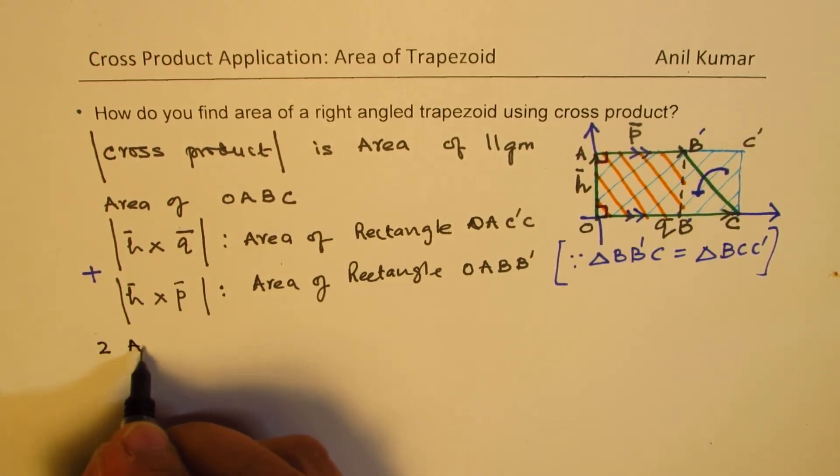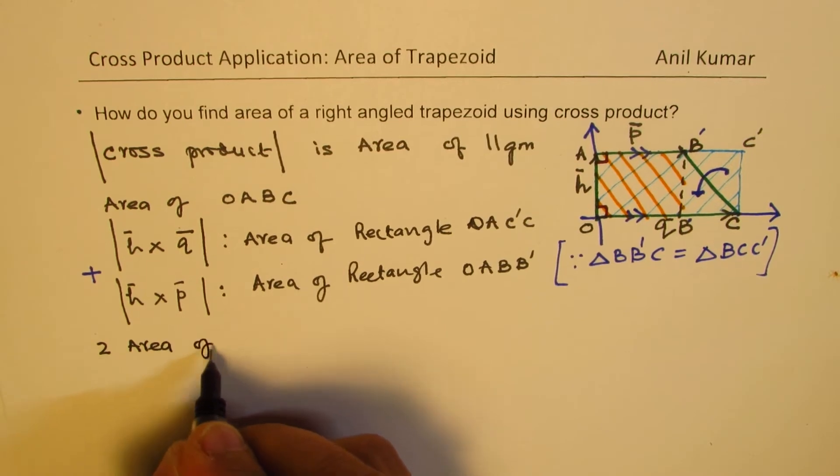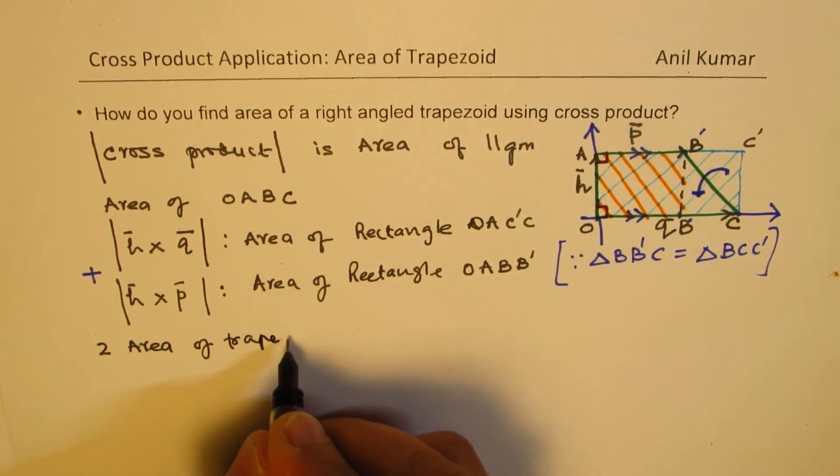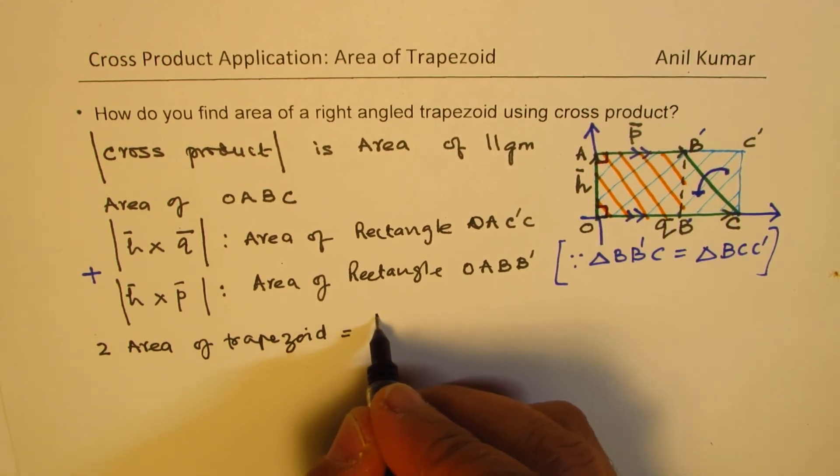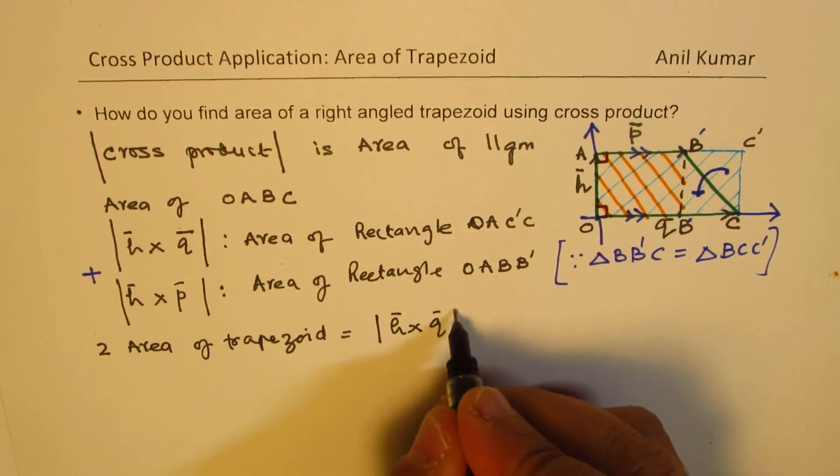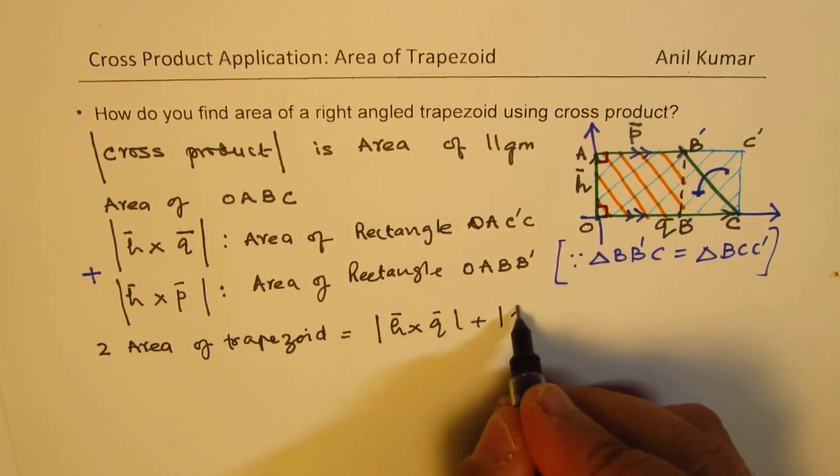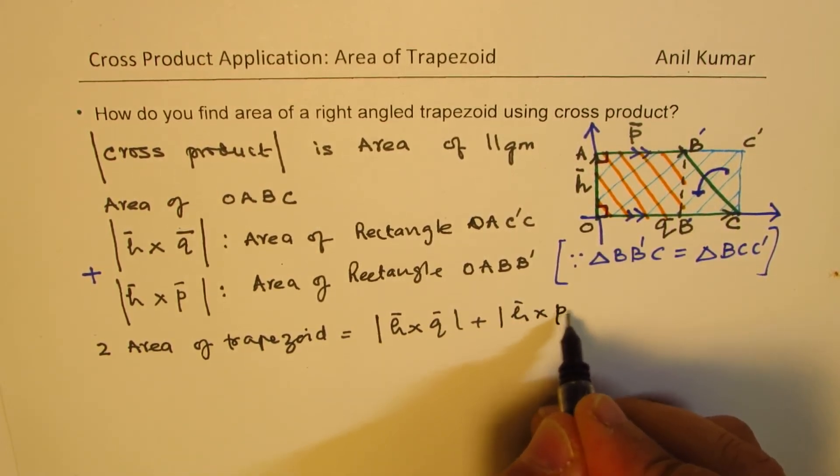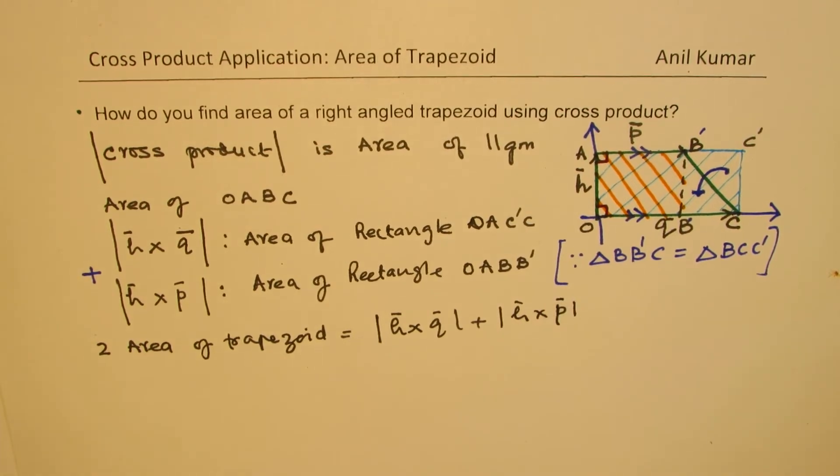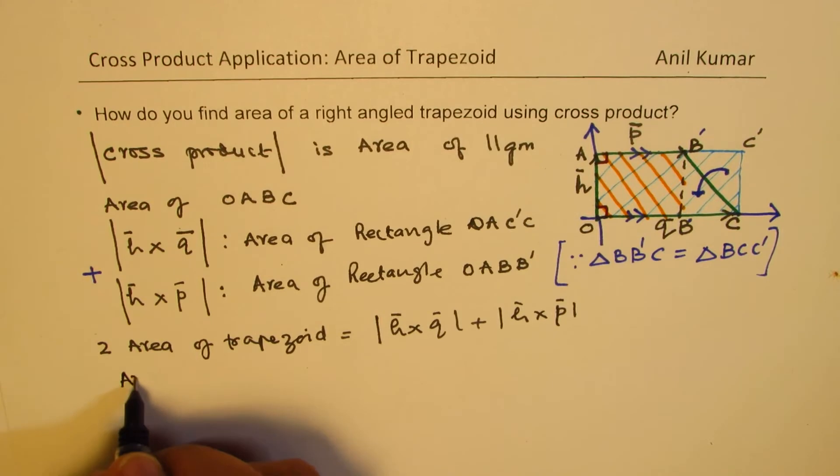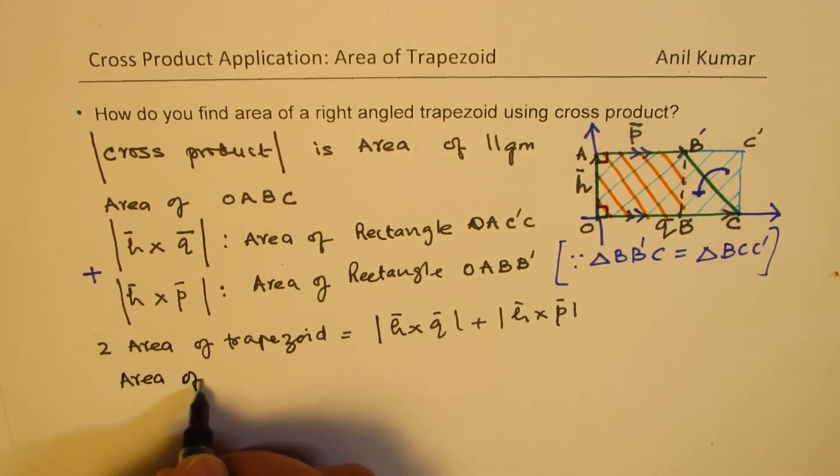Twice area of trapezoid is equal to the magnitude of vector H cross Q plus magnitude of vector H cross P, correct. So, area of trapezoid will be half of this.